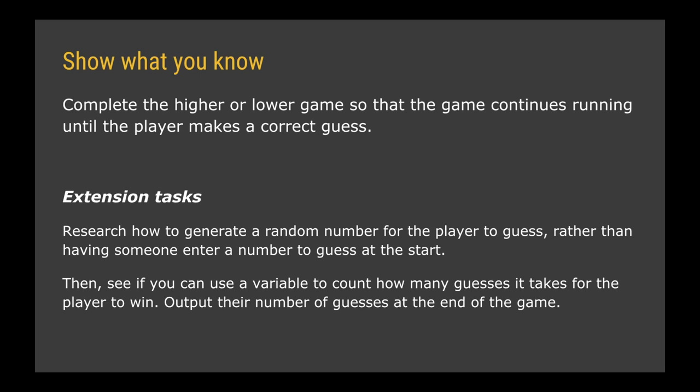There are also some extension tasks to attempt. First, research how to generate a random number for the player to guess — so instead of a second player setting the number, the computer randomly generates it. Just Google 'generate random integer Python' for guidance. If you manage that, use a variable to count how many guesses it takes to win: something like number_of_guesses equals zero at the start, add one each time the while loop runs, and when the loop finishes print out how many guesses it took.